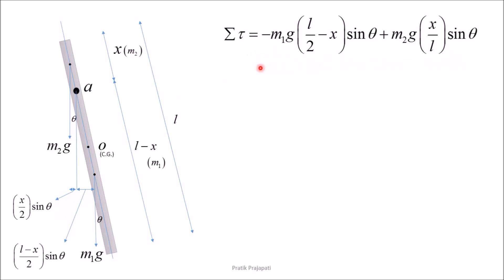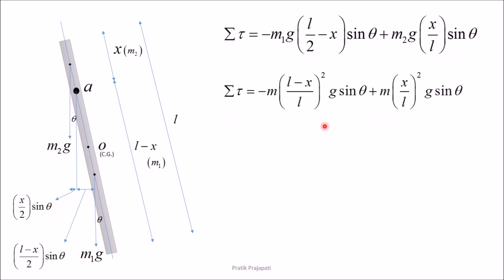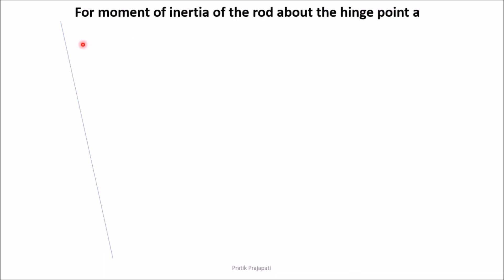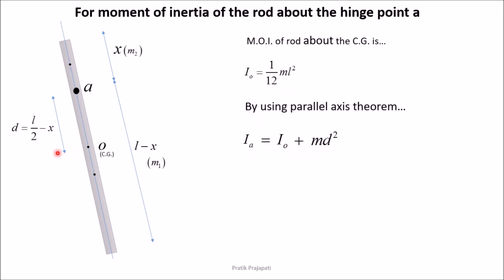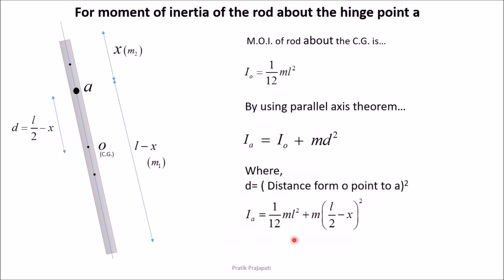The sum of external torques acting on the rod is given by this equation, and by simplifying, we get the net external torque. The inertial torque is given by the moment of inertia of the rod about the hinged point A times the angular acceleration. The moment of inertia about the center of gravity is m·l² divided by 12. Using the parallel axis theorem, the moment of inertia about hinge point A is I₀ plus m·d², where d equals l divided by 2 minus x. Substituting all values gives the moment of inertia about point A.